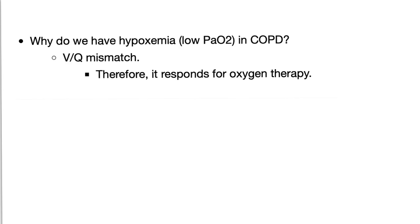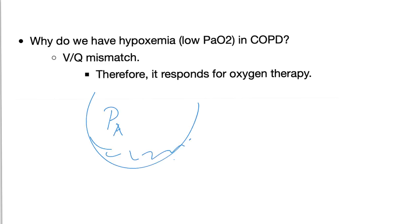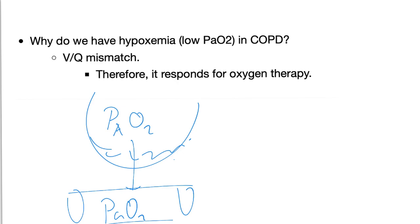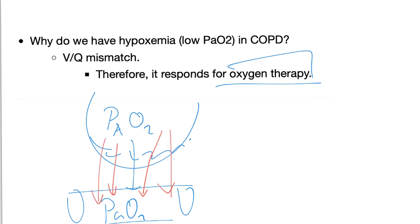Why do we have hypoxemia or low PAO2 in COPD? It's a VQ mismatch. If you destroy the alveolar elastin, oxygen in the alveoli (PAO2) won't transfer into arterial blood (PaO2). Will the patient respond to oxygen therapy? Yes — if you give lots of oxygen, more of it will go into the arterial blood and improve the patient's symptoms.